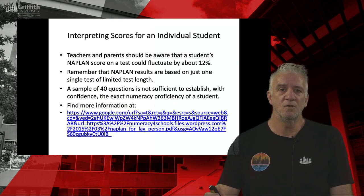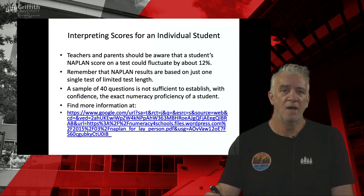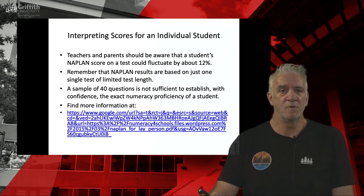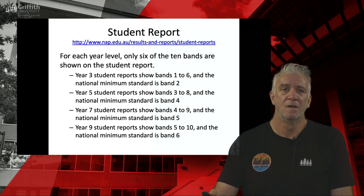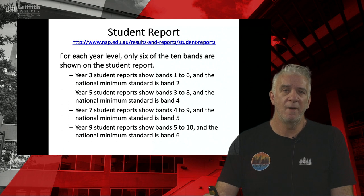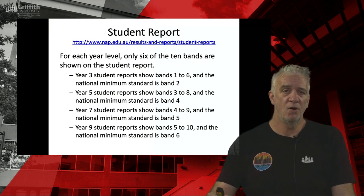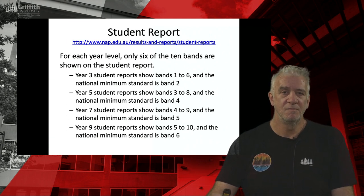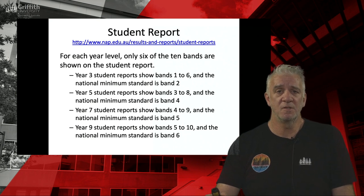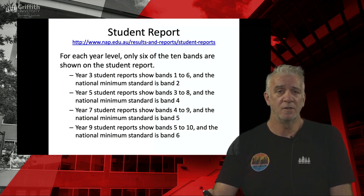Here's another document which could be useful for helping you interpret scores — have a look at it, download it, and see if it helps you think about your own teaching. If it's useful, hang on to it so when you start your career you can refer back to it. This also covers what bands are shown on the student reports — these are reports sent to students' homes, showing a dot indicating where your student is relative to all the others.